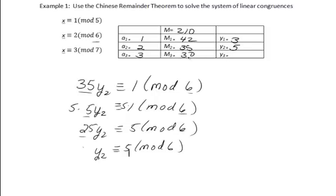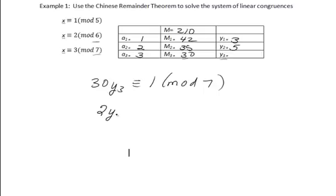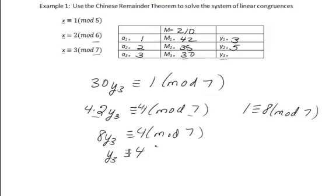Finally, we solve for y3: 30y3 congruent to 1 mod 7. Reducing: 7 goes into 30 four times with remainder 2, so we get 2y3 congruent to 1 mod 7. We find the inverse of 2 mod 7 — since 1 is congruent to 8 mod 7, we multiply by 4 on both sides, getting 8y3 congruent to 4 mod 7. Since 8 reduces to 1, y3 is 4 mod 7.